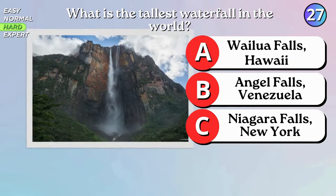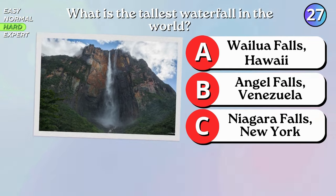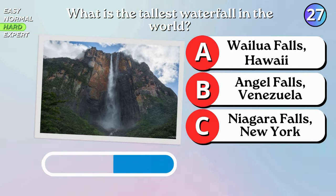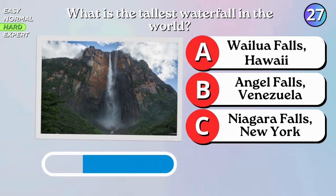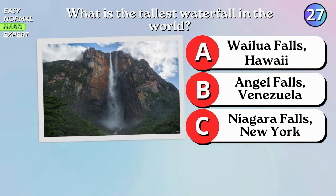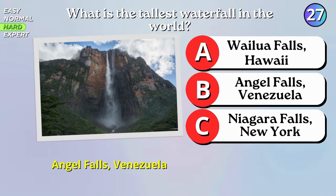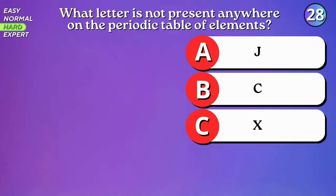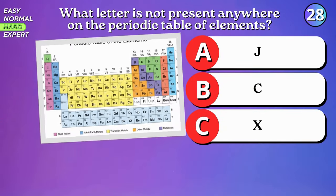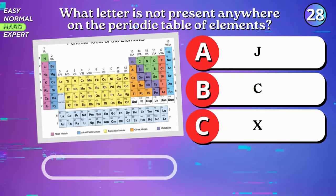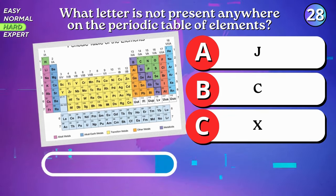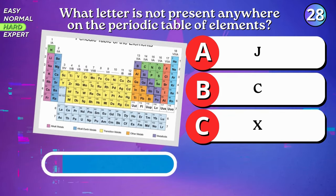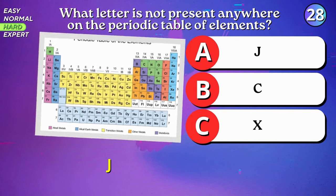What is the tallest waterfall in the world? Angel Falls, Venezuela. What letter is not present anywhere on the periodic table of elements? J.